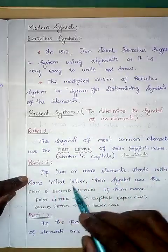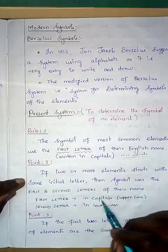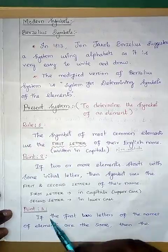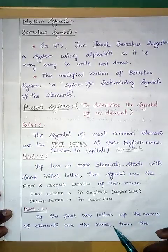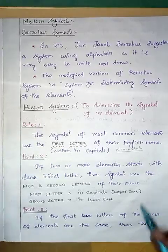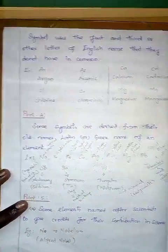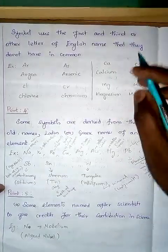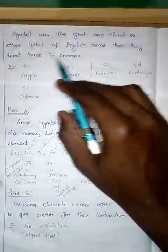So I hope you have understood: if two or more elements start with the same initial letters, the symbol uses the first and second letters of their name. Now come to point number three: if the first two letters of the names of two elements are the same, then the symbol uses the first and a third or other letter of the English name that they do not have in common.